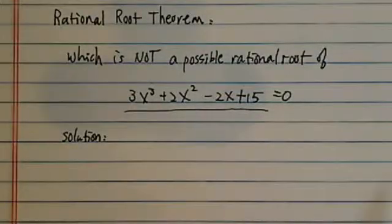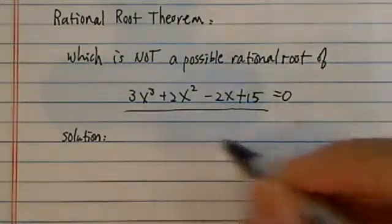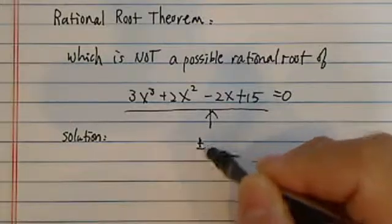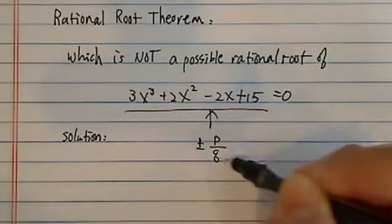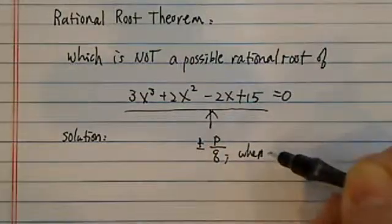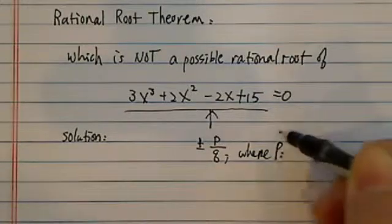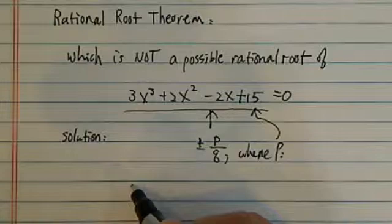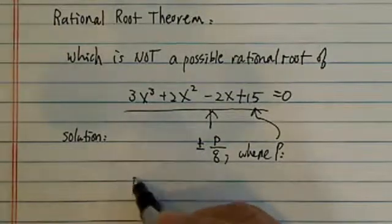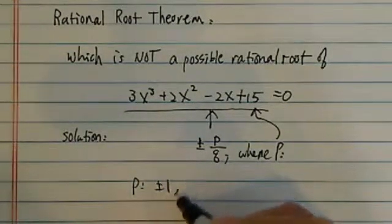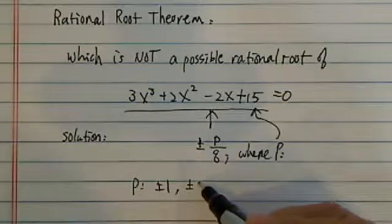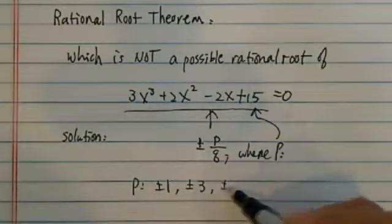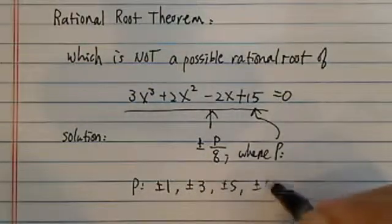If you remember, rational root theorem says a possible solution of this polynomial lies in p over q, where p is the possible numbers consisting of the factors of 15. So p here, we have plus minus 1, other factors, plus minus 1, 3, 5, and 15.